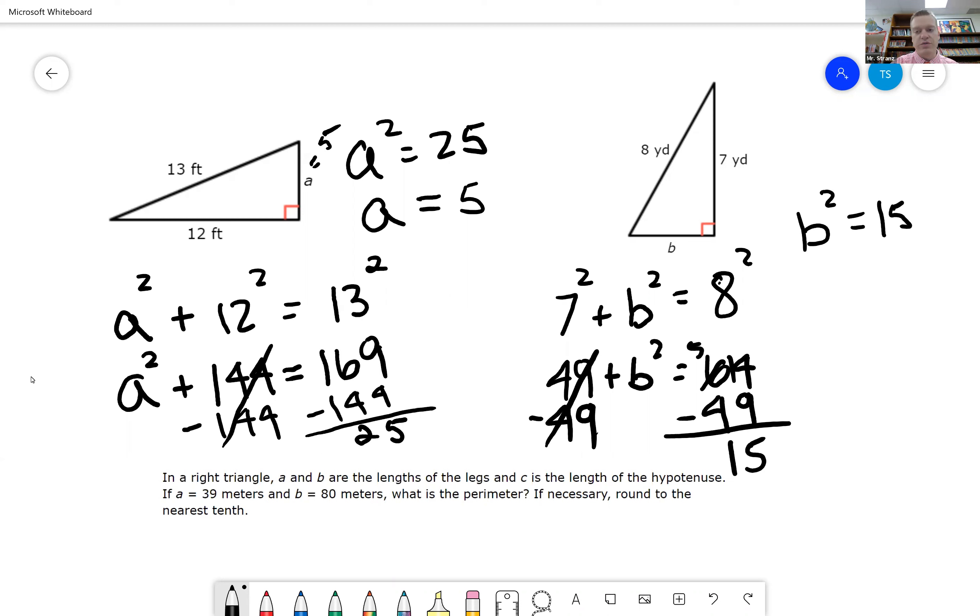So we need to take the square root of 15. The square root of 15, which is approximately 3.87. So B is 3.87.